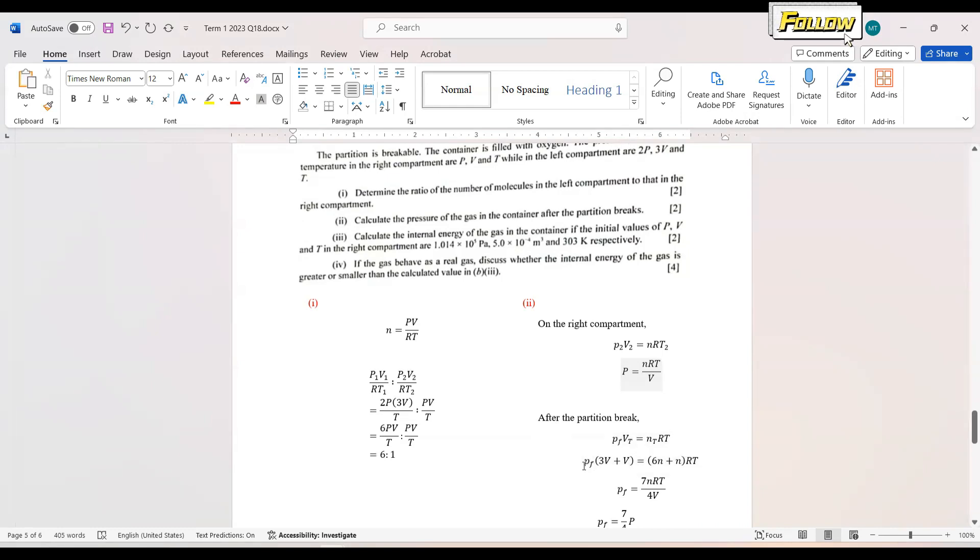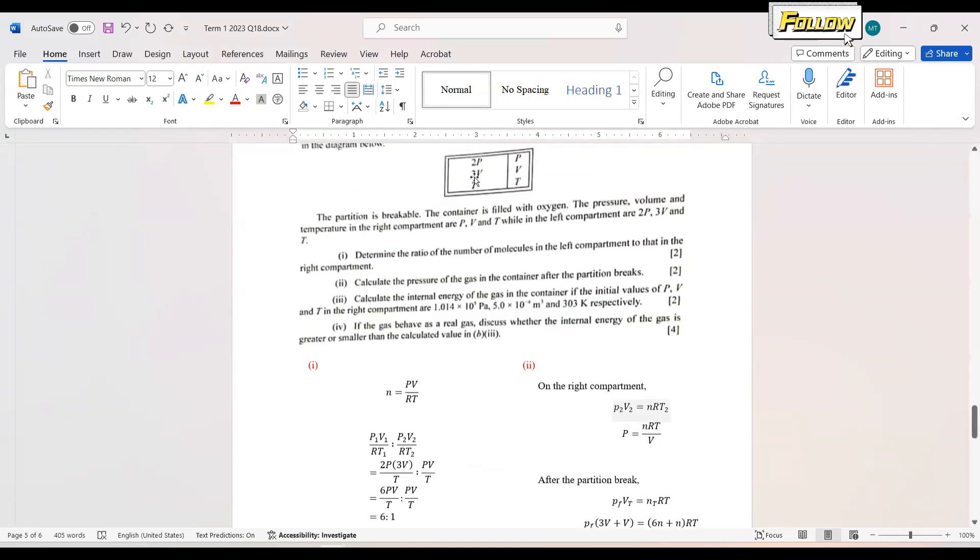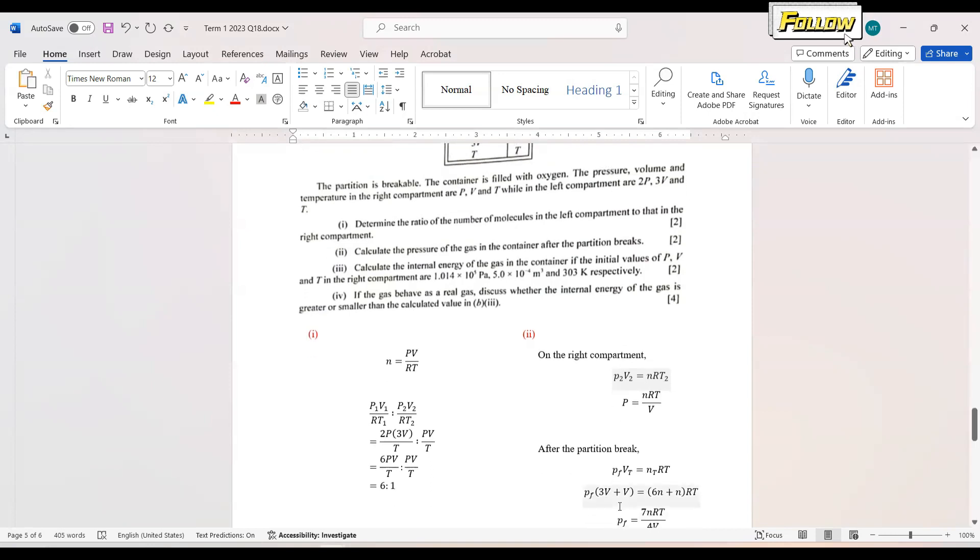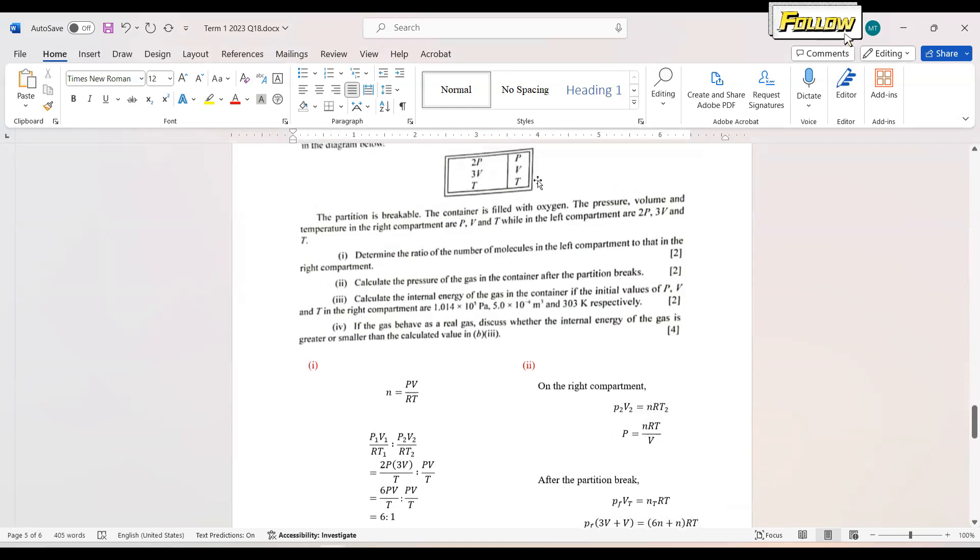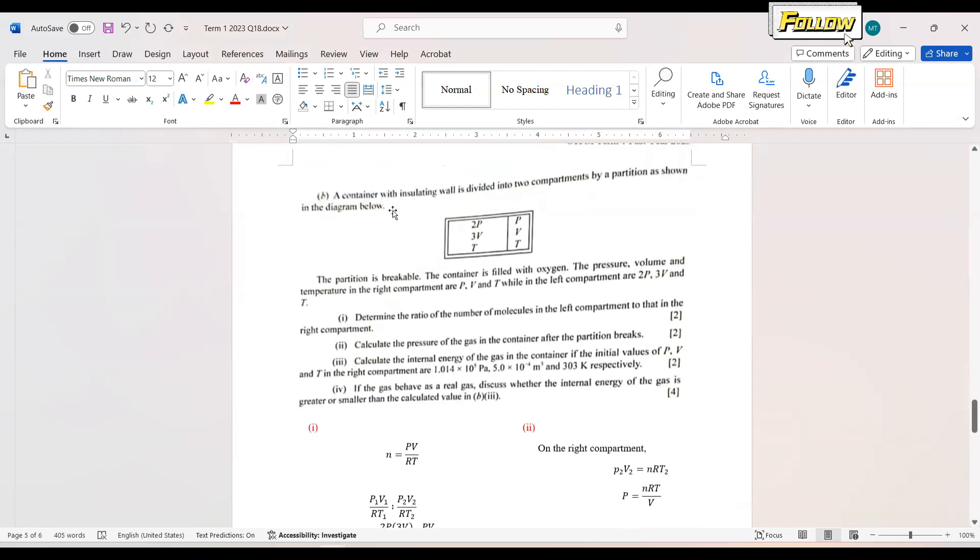The pressure is what we want to find out, and the volume would be the total volume that we have. If we look at the diagram, we have 3V and V, so the total volume is just the addition 3V plus V. As for the number of molecules, we can apply the 6 to 1 ratio: 6N on the left and N on the right. The gas constant and the temperature should be constant since both compartments have the same temperature and the container has insulating walls.